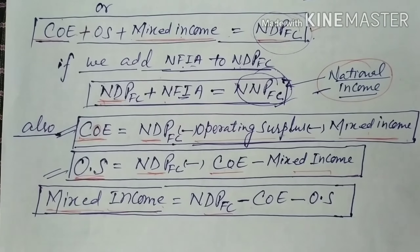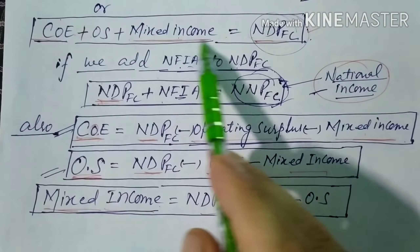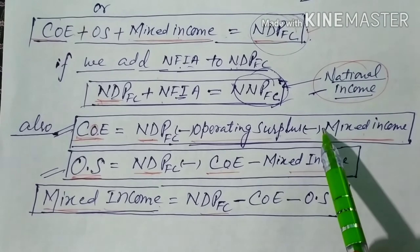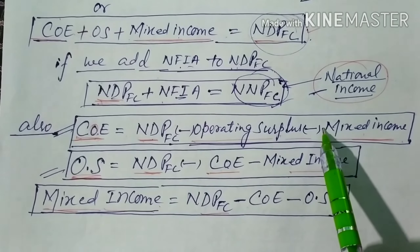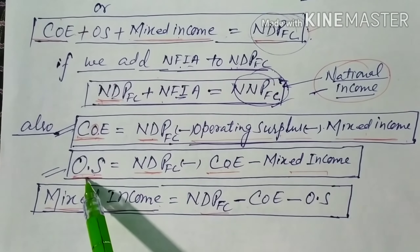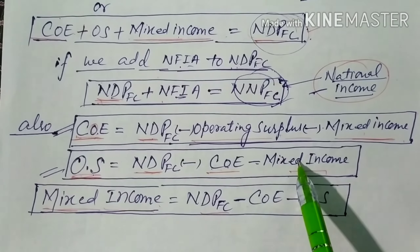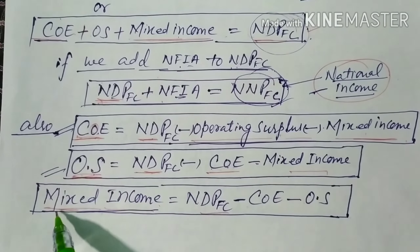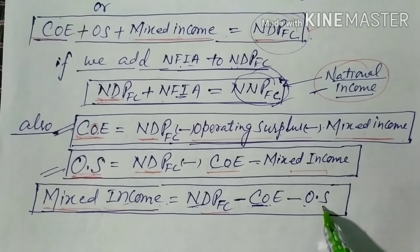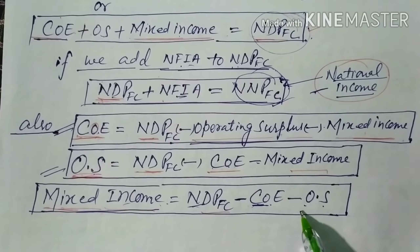Sometimes in a question you are asked to find compensation of employees rather than NDPFC. In that case, from the formula: Compensation of Employees = NDPFC − Operating Surplus − Mixed Income. Similarly, Operating Surplus = NDPFC − COE − Mixed Income, and Mixed Income = NDPFC − COE − Operating Surplus. These rearrangements allow us to find any unknown component.